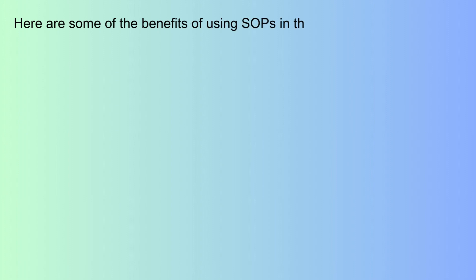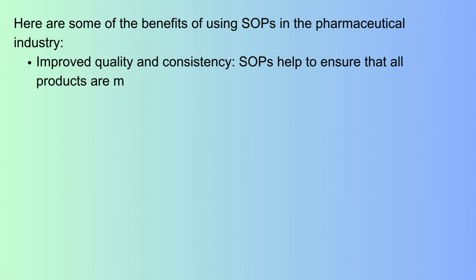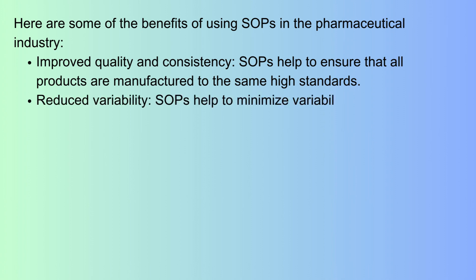Here are some of the benefits of using Standard Operating Procedures in the pharmaceutical industry. Improved quality and consistency: SOPs help to ensure that all products are manufactured to the same high standards. Reduced variability: SOPs help to minimize variability in the manufacturing process.